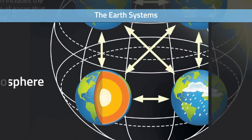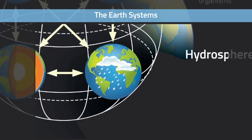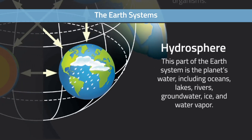The geosphere is the largest of the four spheres, comprising the solid portion of the Earth. It extends 6,400 kilometers from the surface down to the core. The hydrosphere is not limited to the water we see on the surface, such as oceans, rivers, lakes, and seas. It also includes groundwater and ice locked in polar regions and mountains at high altitudes.